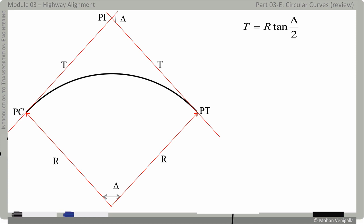And it's given by the formula T equals R tan delta by 2 and now the next element is the length of the curve which just flickered in and that is going to be L equals pi divided by 180 times R delta.